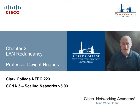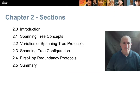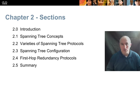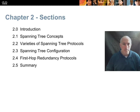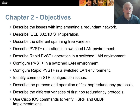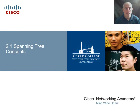Hello, class. Professor Dwight Hughes here for the Clark College NTECH 223 Scaling Networks course. This is Chapter 2, LAN Redundancy. We're going to take a look at spanning tree, the primary way we provide redundancy at layer two with our switching fabric while avoiding loops. We'll look at the varieties of spanning tree protocols, configuring spanning tree, and first hop redundancy protocols—having more than one gateway router. Let's get started.